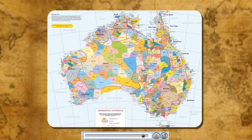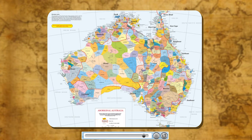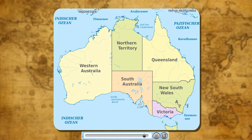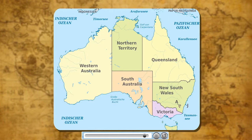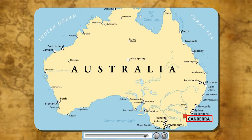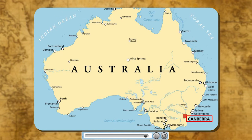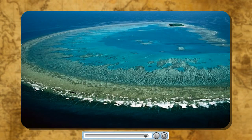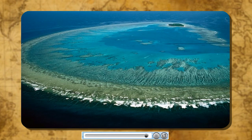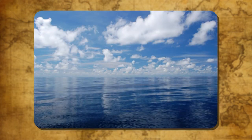Australia is the smallest continent and lies entirely in the southern hemisphere. It is also called an island continent. It is divided into six states and two centrally administered territories. Canberra is the capital of Australia. The major part of Australia is a plateau. The Great Barrier Reef is a unique feature found along the northeastern coast of Australia.